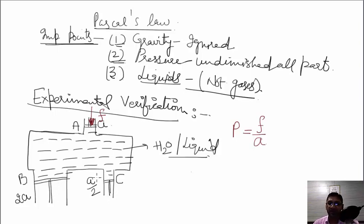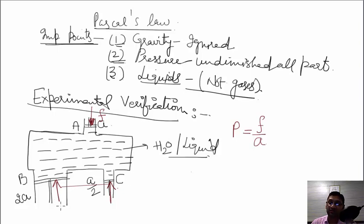On pistons B and C, forces must also be applied from below to prevent the pistons from moving outward. Experiments show that for piston B, the force required is 2F, so that we can stop movement of the piston in the outward direction.